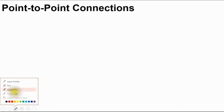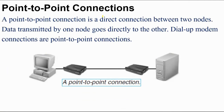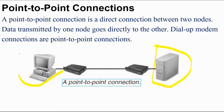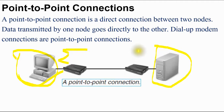The first thing is point-to-point connections. We will understand what is the meaning of point-to-point connections. A point-to-point connection is a direct connection between two nodes. This is one node and this is one node, and it is a direct connection between two nodes. Data transmitted by one node goes directly to the other. If this is a sender and this is a receiver, it will go to the receiver directly.